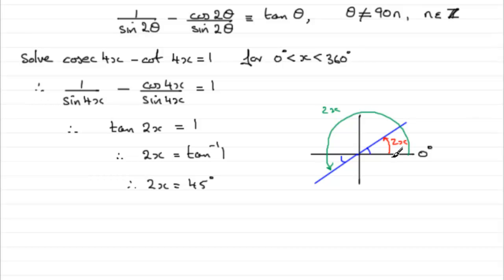OK, so we've got 2x equals 45 degrees. That's that little blue angle in here, 45 degrees. Which means that this red 2x is 45. But we've got other answers. We've got the green one round here, which is going to be 180 degrees plus 45 degrees. And that comes to 225 degrees.